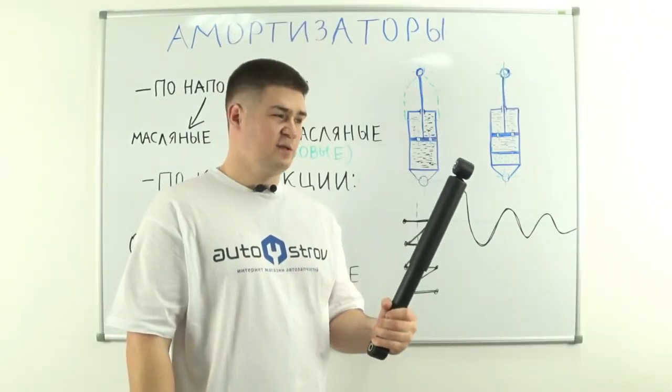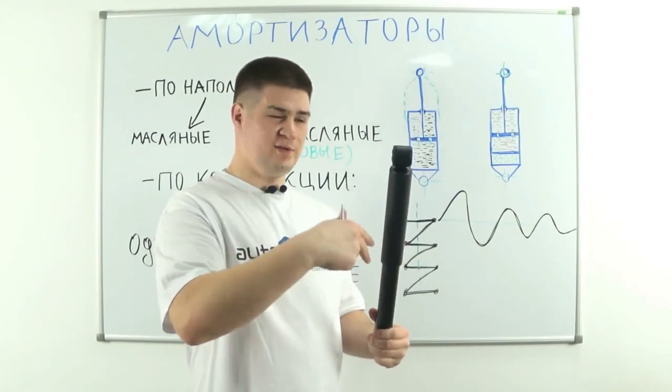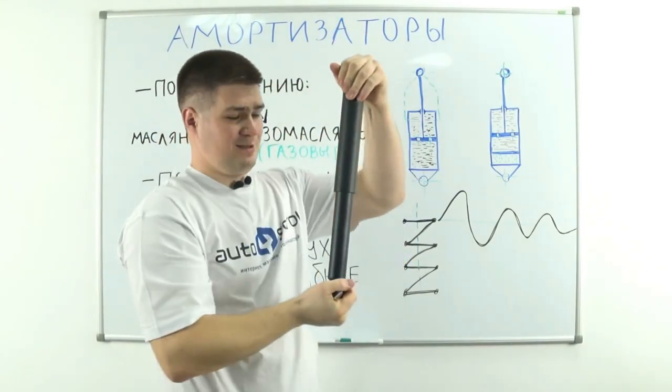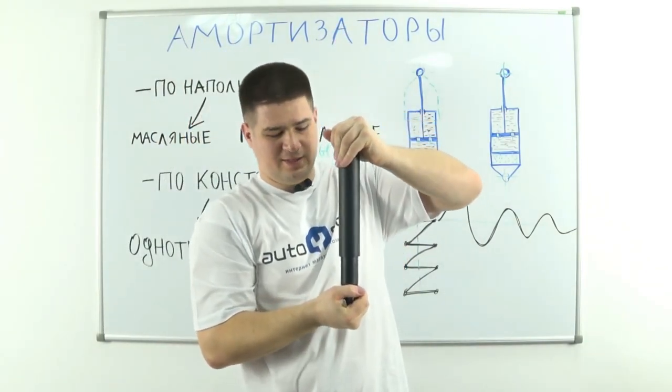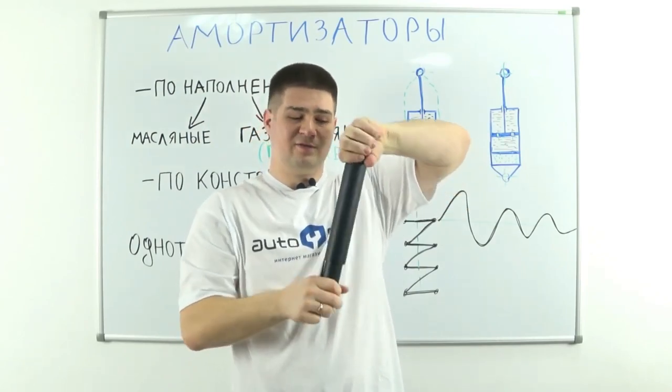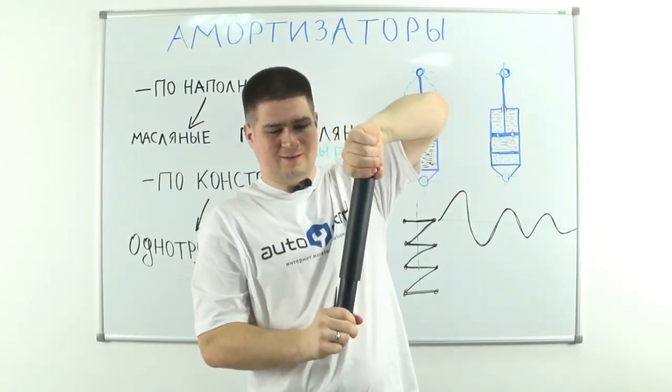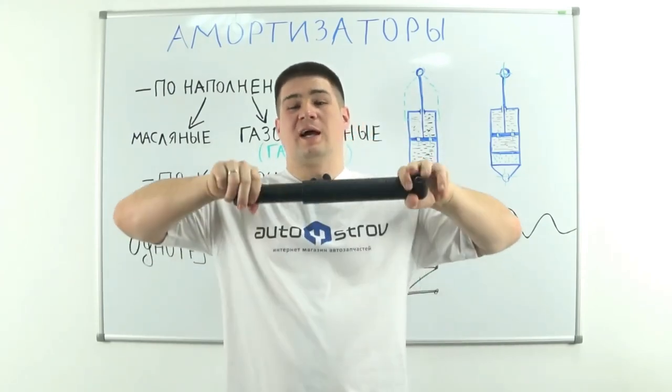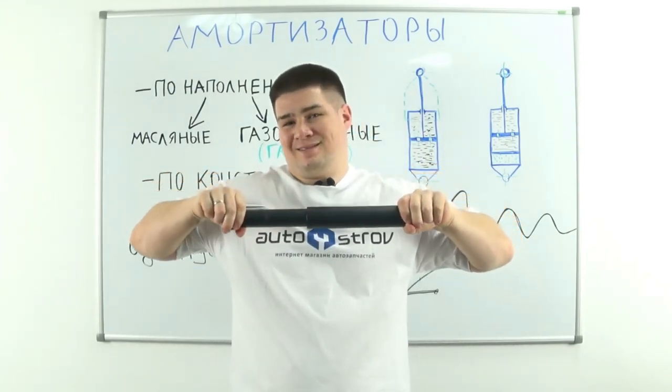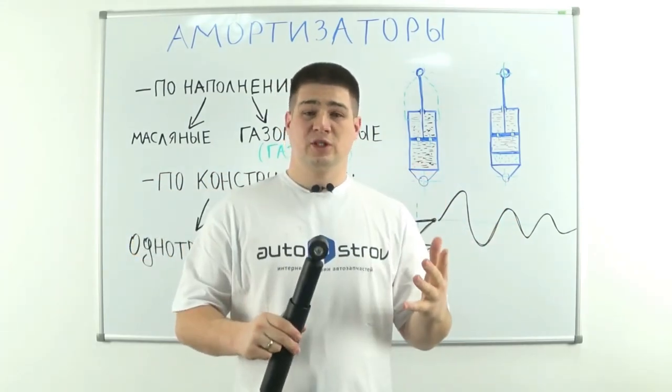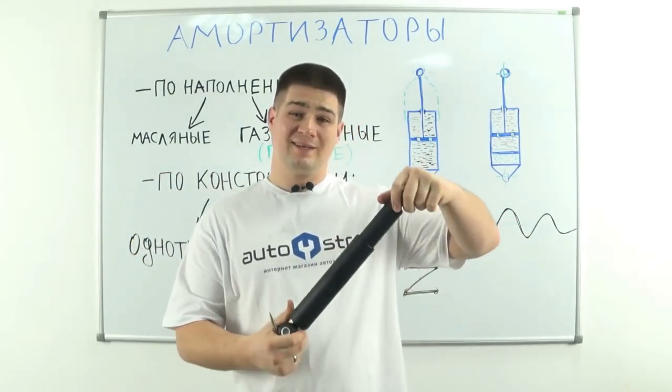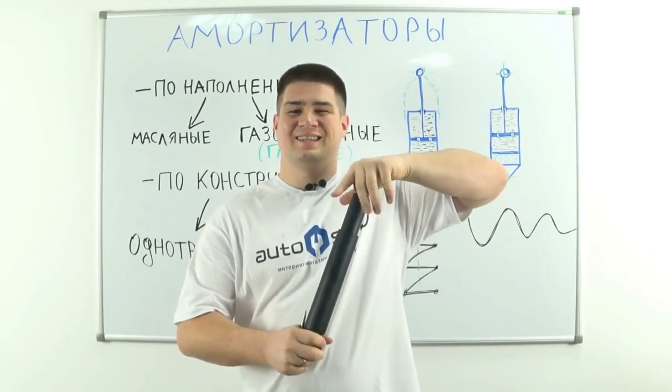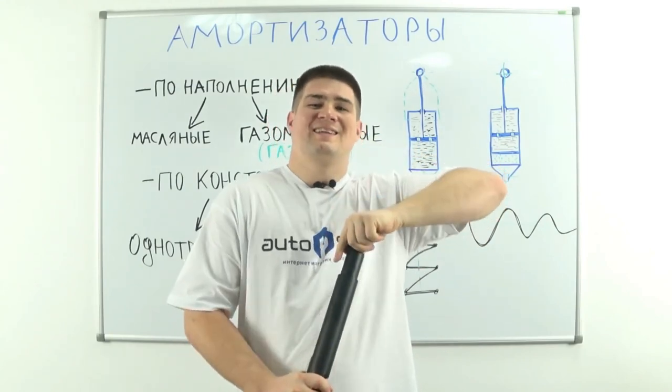Now I'm going to pick up a real shock absorber and show you how it moves. I will try to press now. You see, it creates some resistance for me in the downward and the upward movement, like some kind of damped accordion. That is, it prevents me from both stretching and squeezing. And when the coil spring tries to start oscillating, the shock absorber stops it. It prevents it from oscillating, and thus the suspension vibrations are damped.